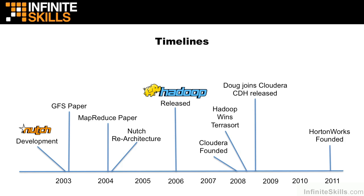In 2008, Cloudera managed to hire Doug to the organization, and they were able to release CDH, the first version of Cloudera's Distribution of Apache Hadoop. In 2011, they got competition from a company called Hortonworks, which also provides services and support. Cloudera had a three-year head start on them, and it's been difficult for Hortonworks to catch up.